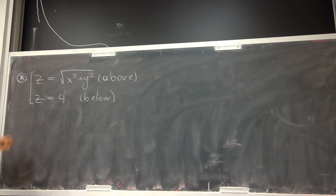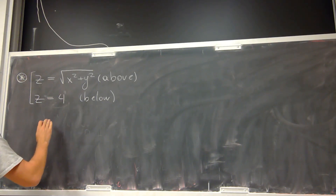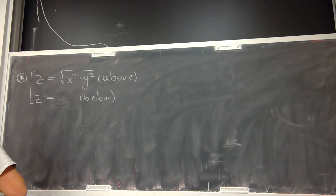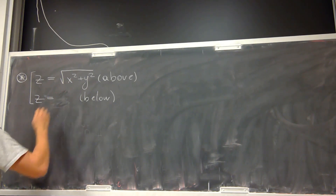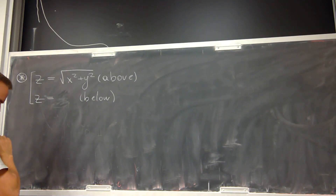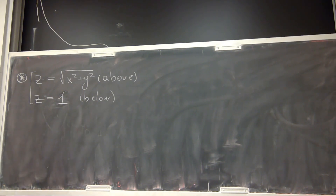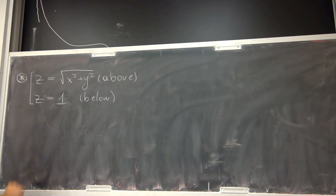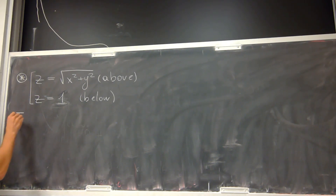Actually, if z equals 4 then my angle is not going to be nice, so let's change this to z equals 1. We can put any constant — it doesn't really matter — but z equals 1 will give us a nicer angle.